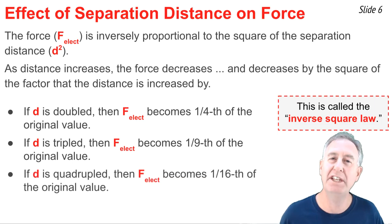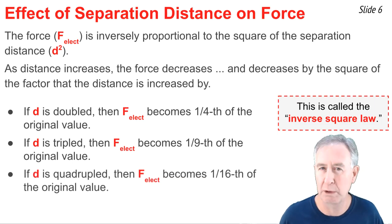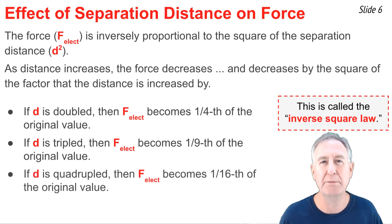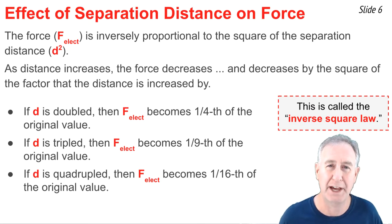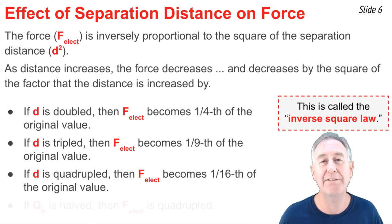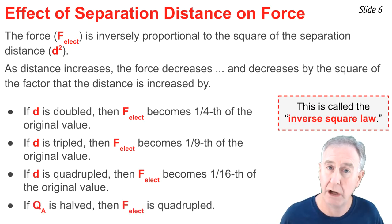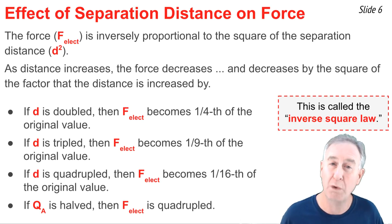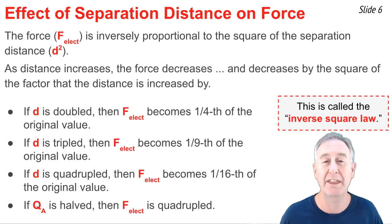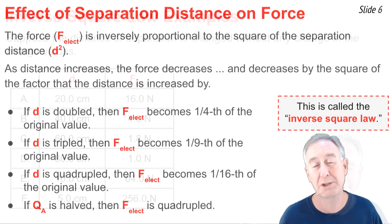And if D is quadrupled — four times bigger — the force would become one-sixteenth of its original value. And finally, if D got smaller and were halved, then the force would get bigger and be four times the original value. That's 2 squared.